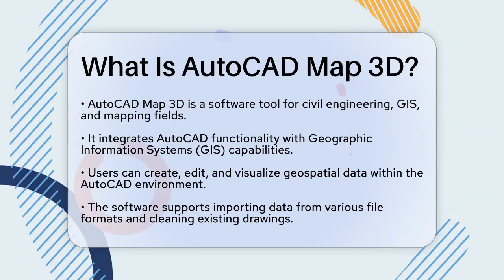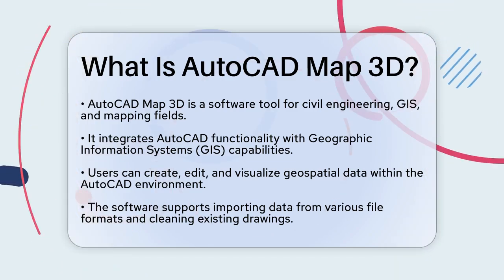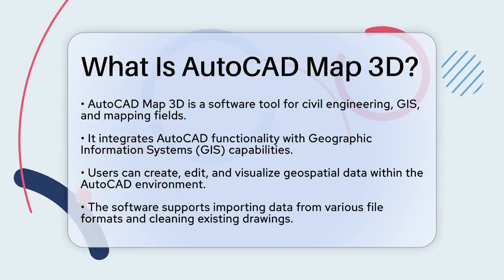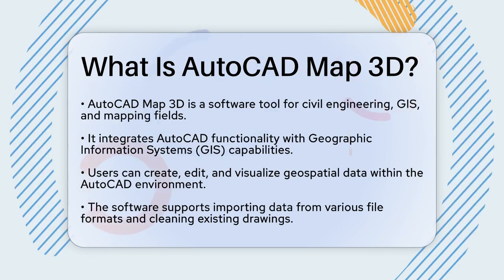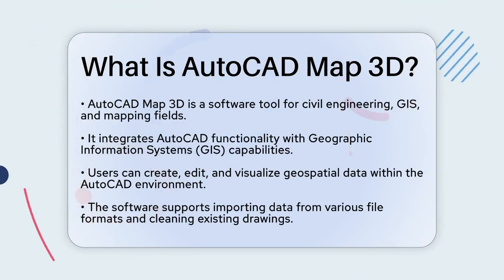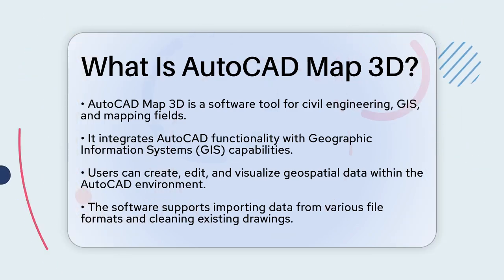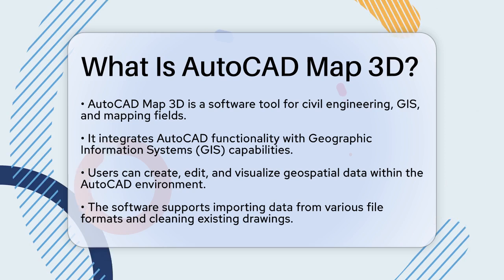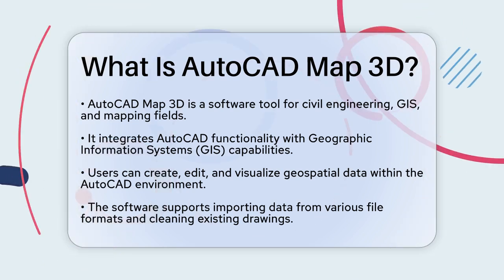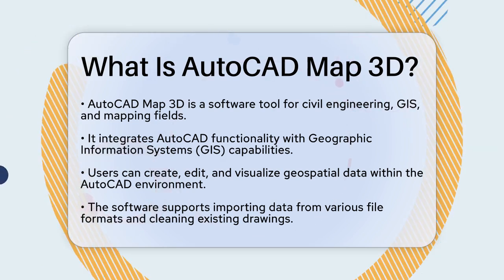AutoCAD Map 3D is a powerful software tool that combines the functionality of AutoCAD with the capabilities of Geographic Information Systems, GIS. This means you can create, edit, and visualize geospatial data right within the familiar AutoCAD environment.